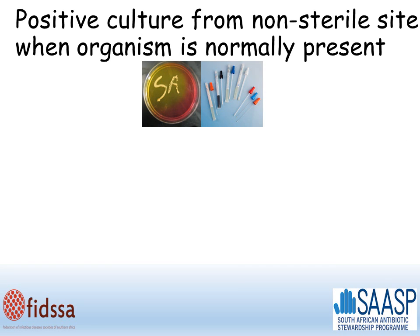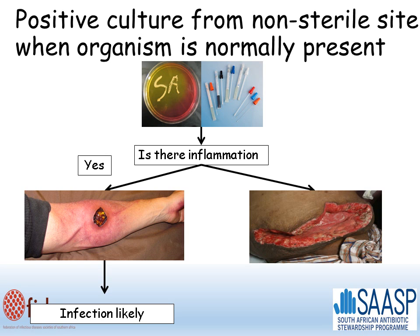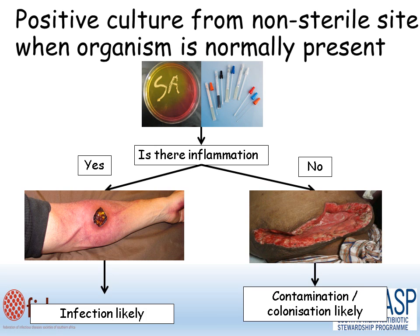If you get a positive culture from a non-sterile site, your approach depends on whether the organism is normally present at that site. Taking the example of a pus swab which has grown a Staph aureus, the question is: is there inflammation? If yes — as in a patient with a wound with clear cellulitis around it — then a pus swab growing Staph aureus is likely to represent infection. But if there's no inflammation present, growing Staph aureus would represent colonization or contamination. Taking a pus swab from a non-inflamed wound is never likely to be beneficial because the wound will be colonized or contaminated with organisms you cannot act on.